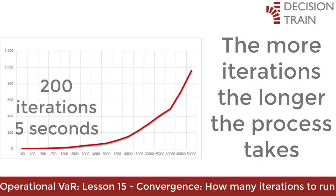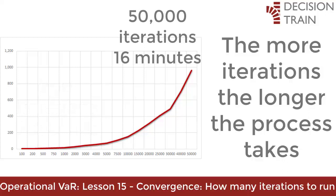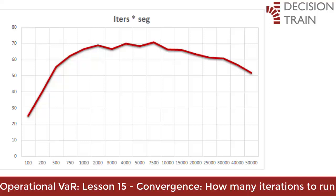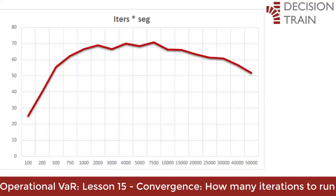Generating 200 iterations — the maximum limit in the free version of DT simulator — will only take 5 seconds on my computer for this particular model. 50,000 iterations will take more than 16 minutes. In terms of iterations per second, it seems that an optimum is reached around 2,000 to 8,000 iterations, at which the simulation process runs around 70 iterations per second. After this threshold, the process becomes less efficient as difficulties in storing and handling large amounts of data affect Excel.